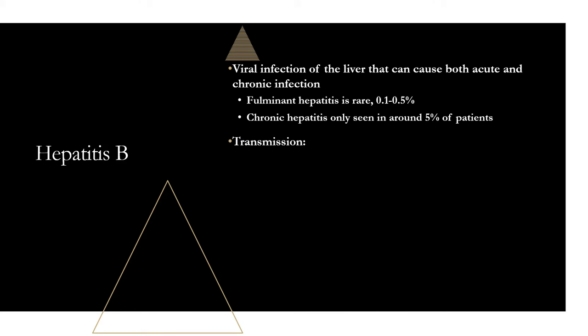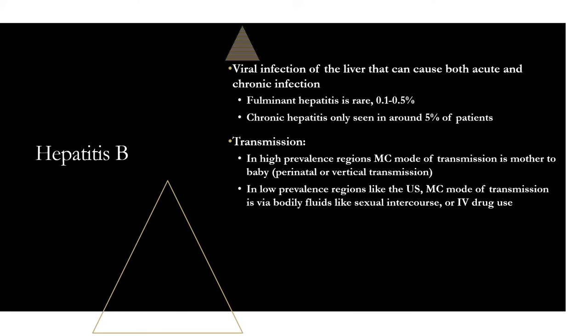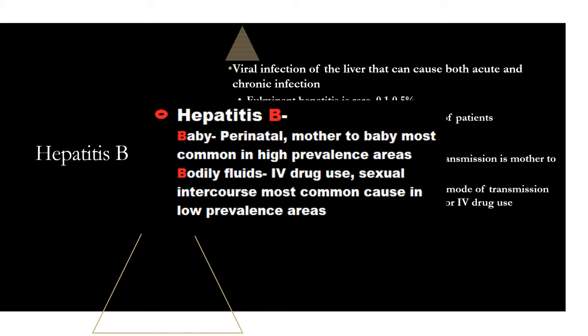For hepatitis B transmission, there are two main routes. In high-prevalence areas, the most common mode is vertical or perinatal transmission — a pregnant mother passing it to the newborn. In low-prevalence regions like the U.S., the most common mode is bodily fluids: sexual intercourse and IV drug use. The way I remember it: hepatitis B stands for 'baby' and 'bodily fluids.'